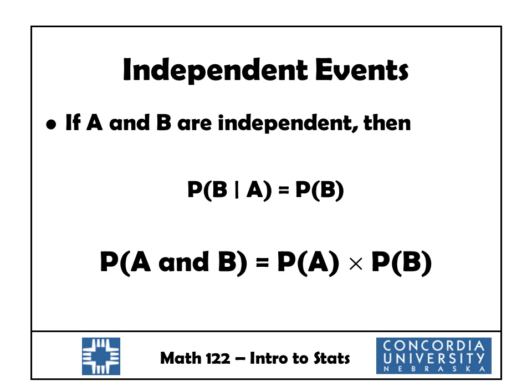What's nice about independent events is that they simplify our multiplication rule formula. If they are independent, then the probability of B given A is just the probability of B. And so our multiplication rule simplifies down to: probability of A and B equals probability of A times the probability of B. We don't have any conditional probabilities involved here because everything is independent.